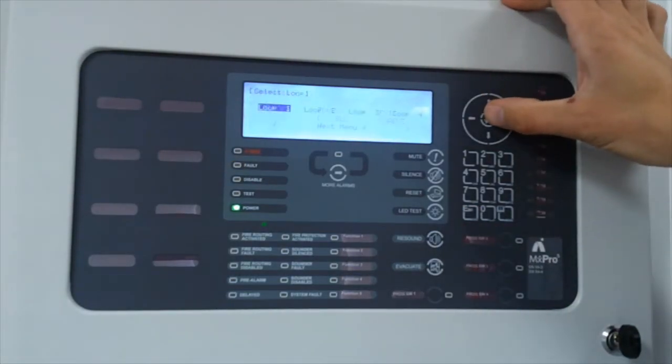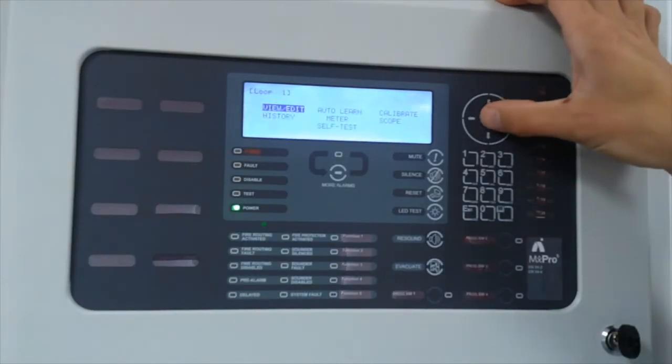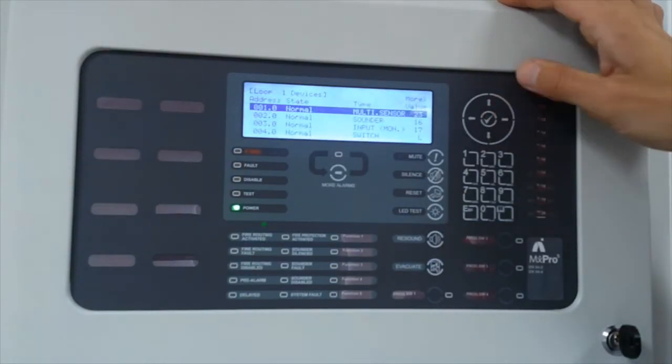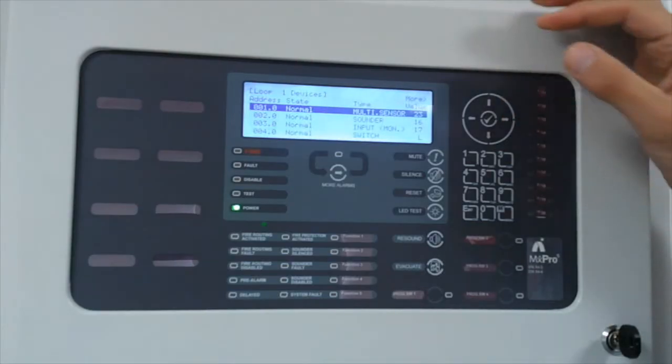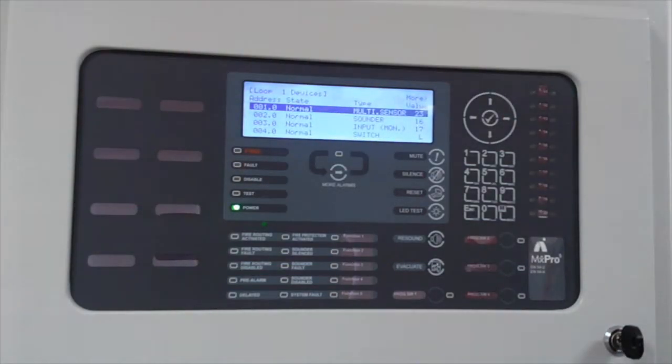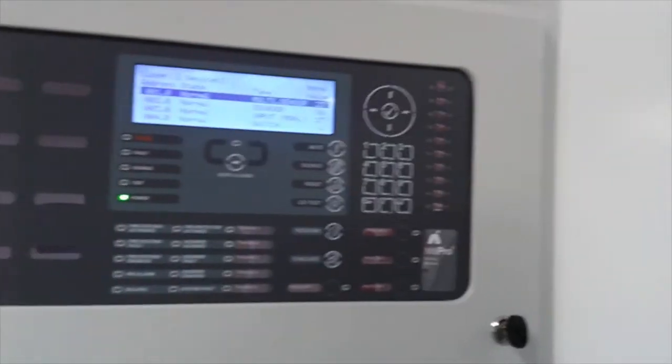We know it's on loop one. We go to the loops, loop one, identify your devices, making sure you've got the relevant information. One of the key points now is basic fault finding techniques. Put the panel into commissioning. Remember, the panel only drives in one direction - that's from the V out.